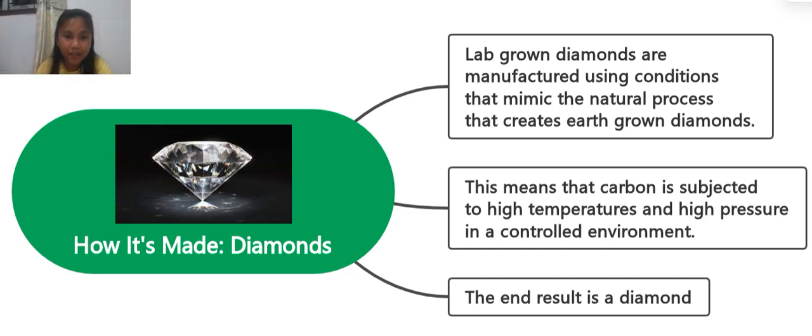Well, what did you find out? By the way, making diamonds is really easy. Let me just read it one more time. Lab-grown diamonds are manufactured using conditions that mimic the natural process that creates earth-grown diamonds. This means that carbon is subjected to high temperatures and high pressures in a controlled environment. The end result is a diamond. And that's all.